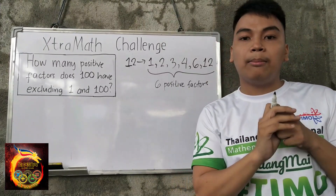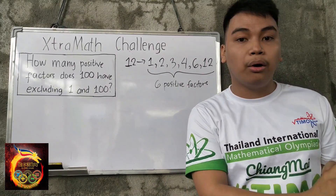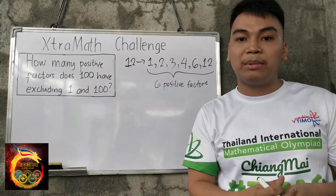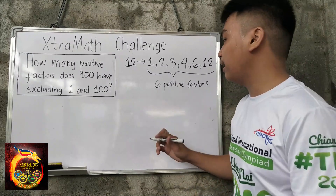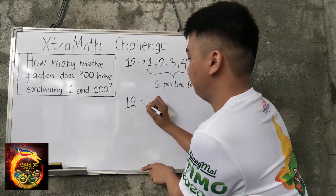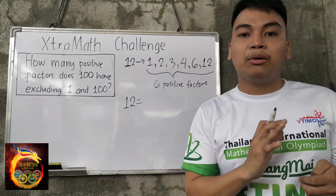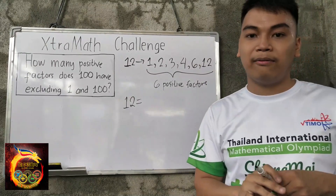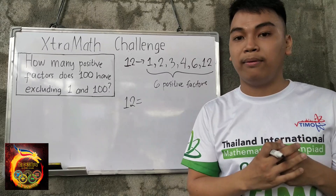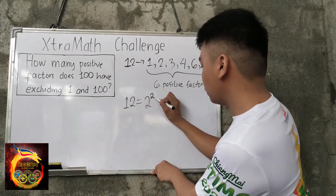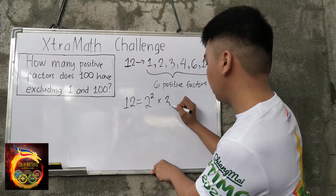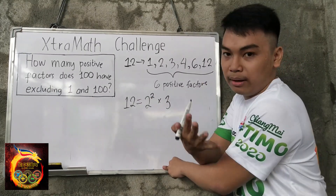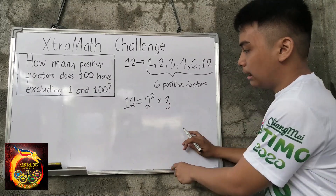But what if the number is large — for example, 1 million or 1,000? If we just list them, it will take a long time. So what is the technique to make it easier to solve? Step 1: We need to get the prime factorization of the number. Here, our number is 12. The prime factorization of 12 is 2 squared times 3, because 2 squared is 4, multiplied by 3 is 12.